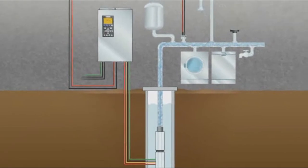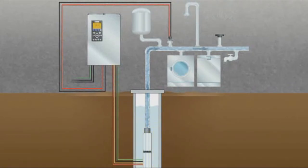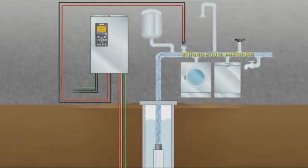When demand rises, the Pentec Intellidrive increases pump motor speed and water flow. When demand drops, speed and flow are reduced. The result is strong, equal pressure everywhere in the home.